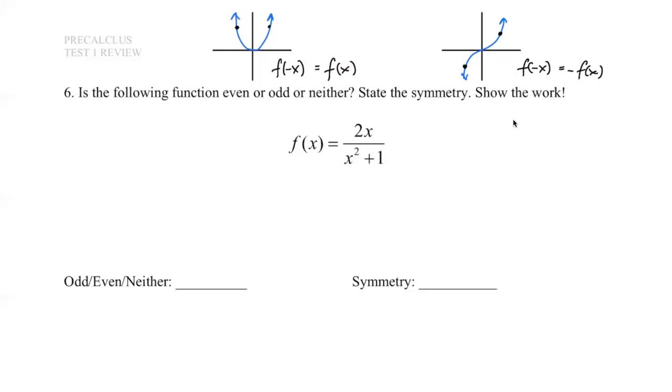So what do we do here? What we do here is to make sure that we have f of negative x, meaning that every single x that you see right there in the function will now be replaced by negative x. And we want to see how that will show up. So we have negative two x over x squared plus one. So what you see here is that this is the original function, right?